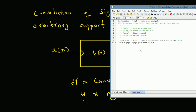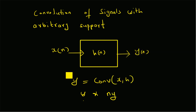In this modified convolution, we can clearly see that we have the commands for computing the time support. For example, if n_x is the time support for x[n] and n_h is the time support for h[n], then the corresponding time support for y[n] is given by a vector starting at the sum of the first value in n_x and the first value in n_h. Let us look at an example illustrating this.